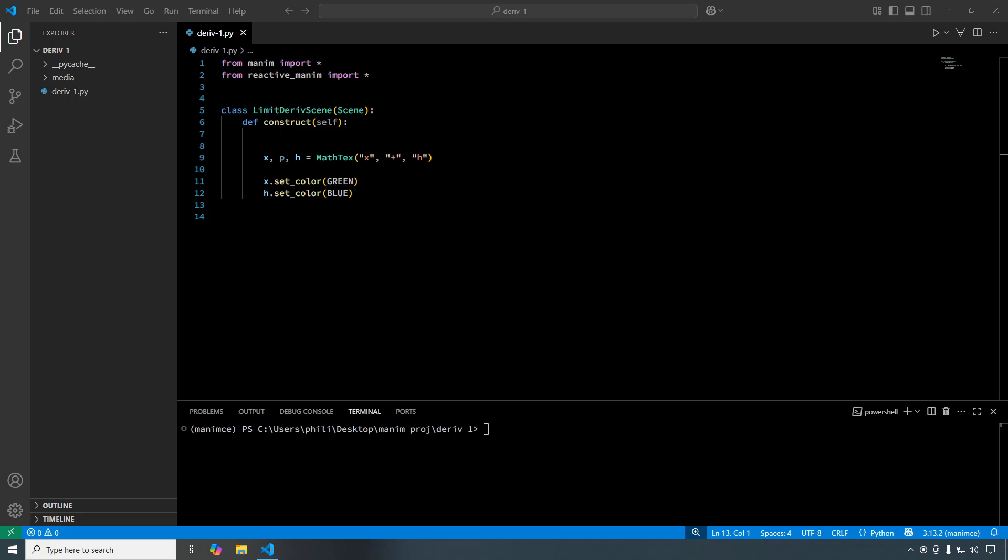Let's put what we've gone over so far into Visual Studio Code. In this file I import manim and reactive manim, create a scene, and in the scene we obtain math strings for x plus and h. We construct the function component and add it to the scene. Then we construct x plus h squared and perform the replacement transform.